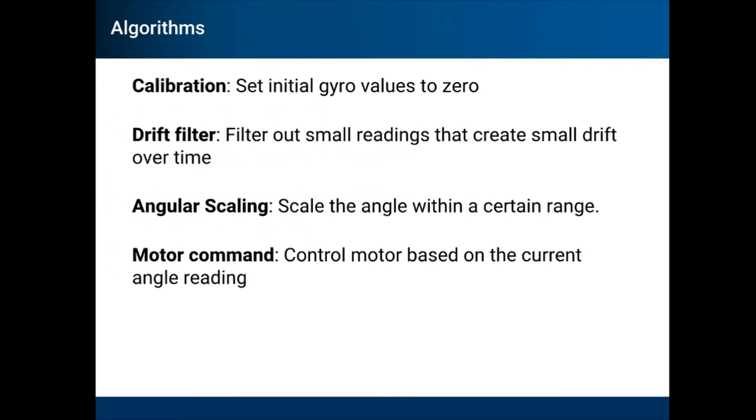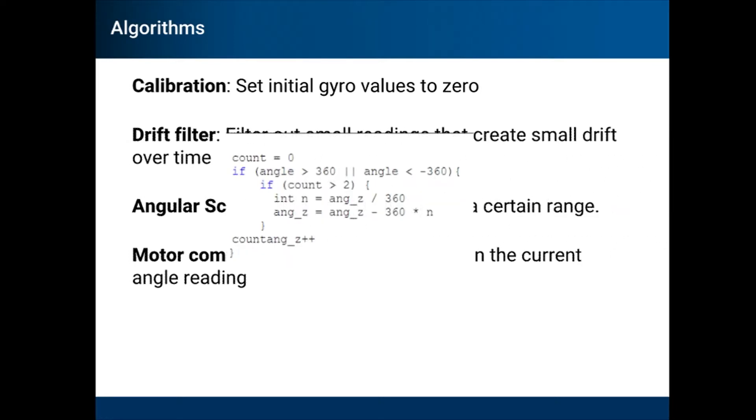Our next algorithm was an algorithm to scale the angle within negative 360 to 360 degrees. This algorithm was created by removing or adding multiples of 360 until the gyro reading was within the specified range.